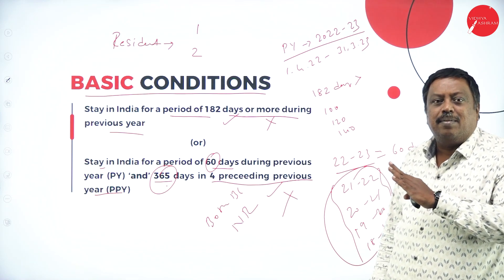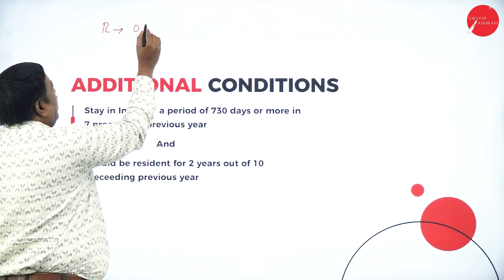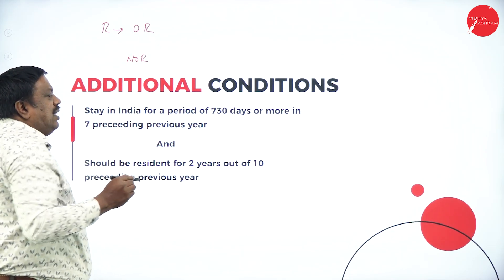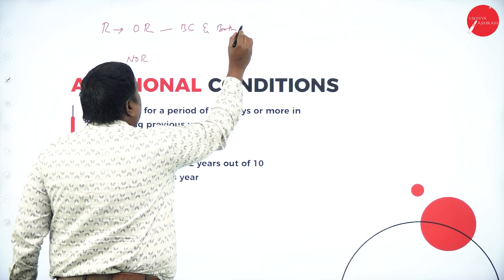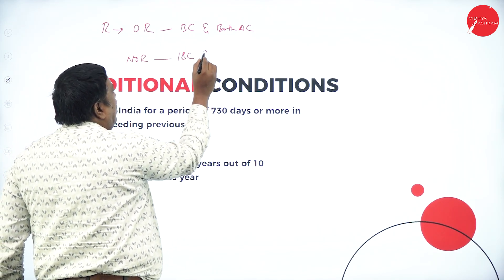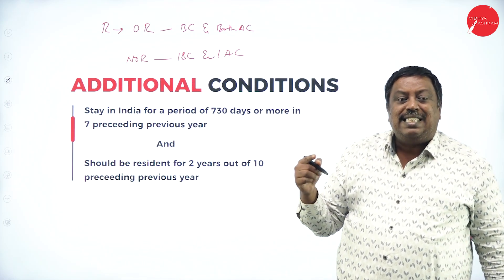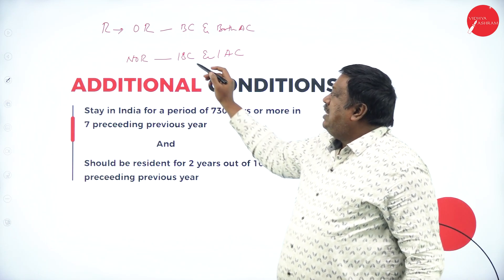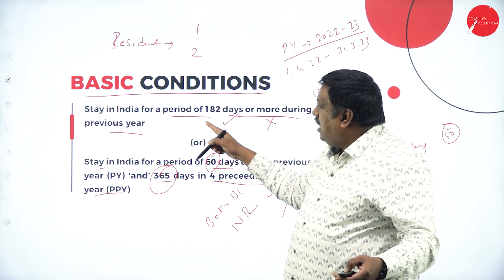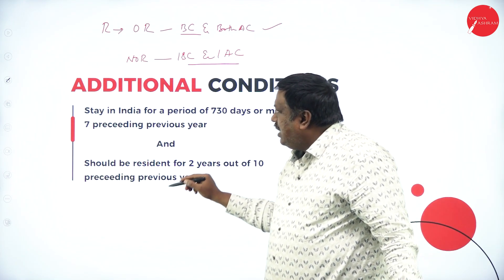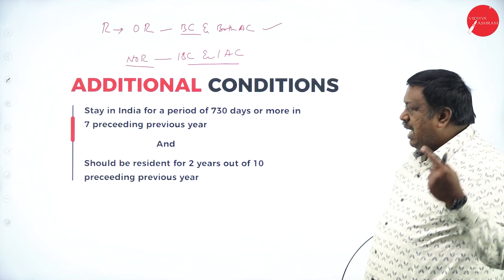Once I am a resident, I further need to be classified as ordinary resident or not ordinary resident. When I satisfy the basic condition and both additional conditions, they call me an ordinary resident. When I satisfy one basic condition and only one additional condition, they call me resident not ordinary resident. So to be resident ordinarily resident, I must have satisfied the basic conditions and both additional conditions.